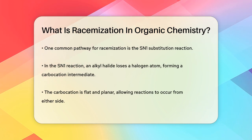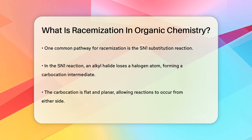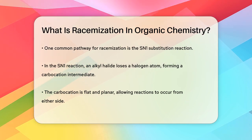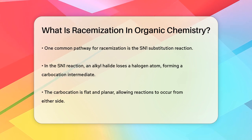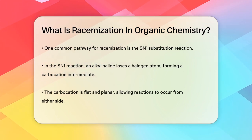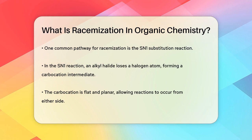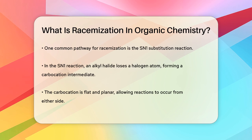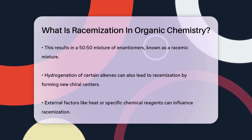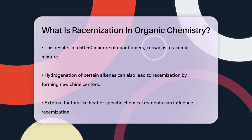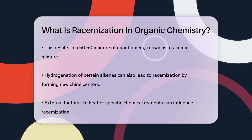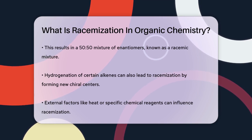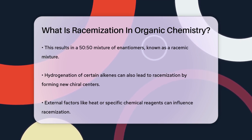One common way racemization occurs is through a type of reaction called the SN1 substitution reaction. When an alkyl halide, a molecule with a carbon-halogen bond, reacts, the halogen atom breaks off, forming a carbocation intermediate. This carbocation is flat and planar, meaning it has no preferred side for reactions to occur. As a result, when a nucleophile like water approaches this carbocation, it can do so from either the top or the bottom with equal probability, leading to the formation of a 50-50 mixture of the two enantiomers, which is what we call a racemic mixture.